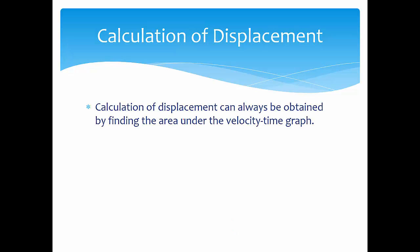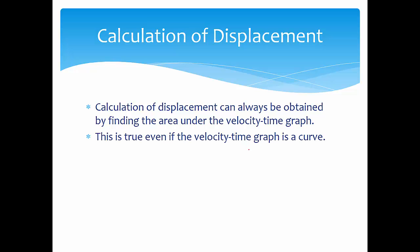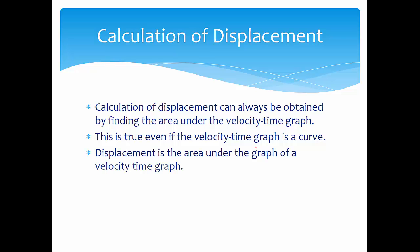Displacement can always be obtained by finding the area under the velocity-time graph. This is true even if the velocity-time graph is a curve or any other irregular shape. Simply put, displacement equals the area under the velocity-time graph.